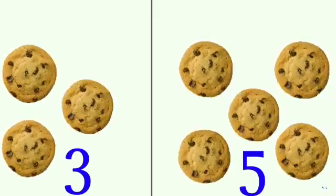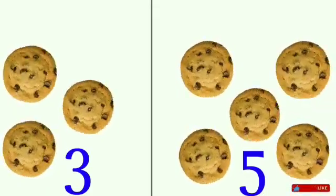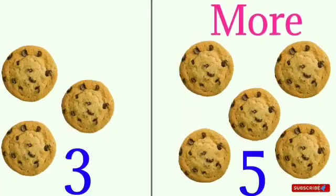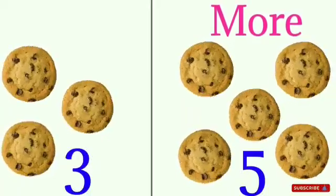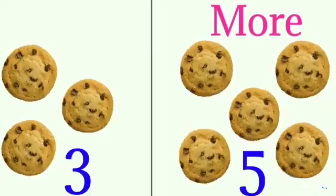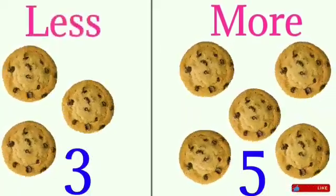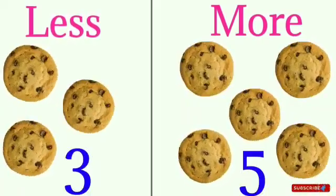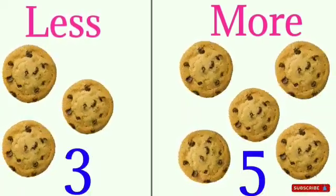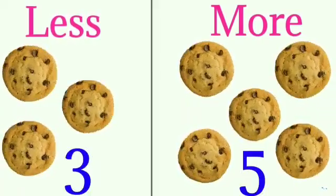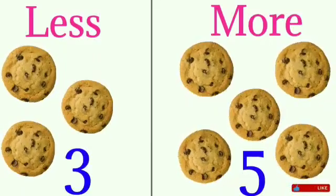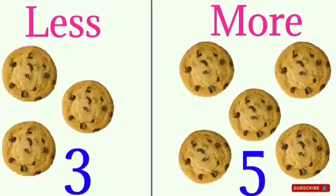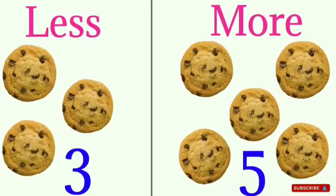Yes, the second group has more cookies and the first group has less cookies. Children, three is less and five is more. Three is less than the number five, and five is more than the number three.